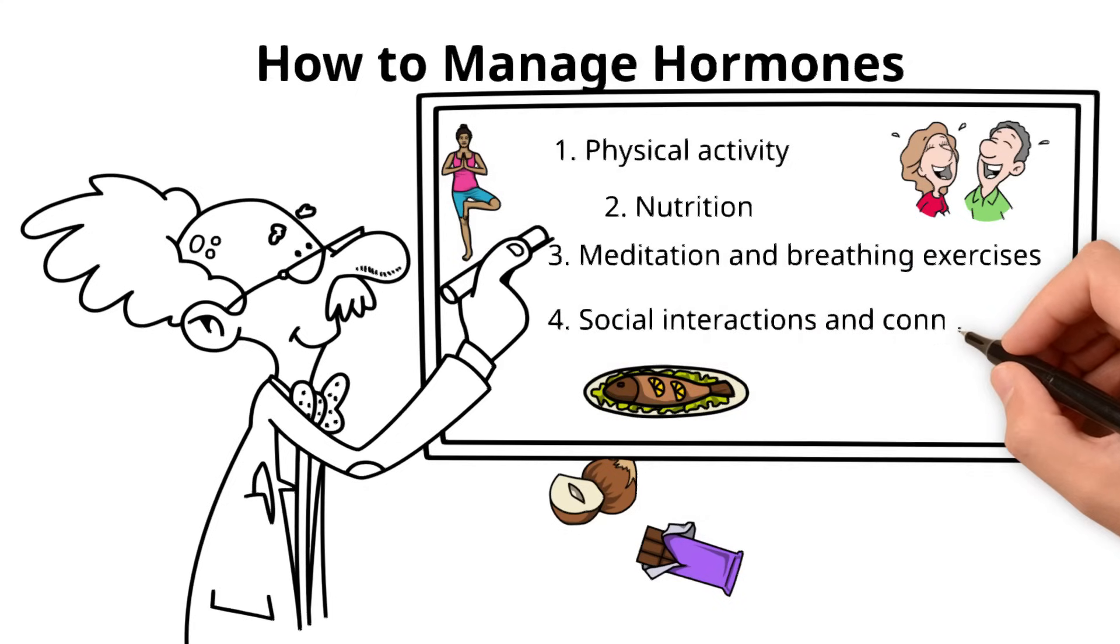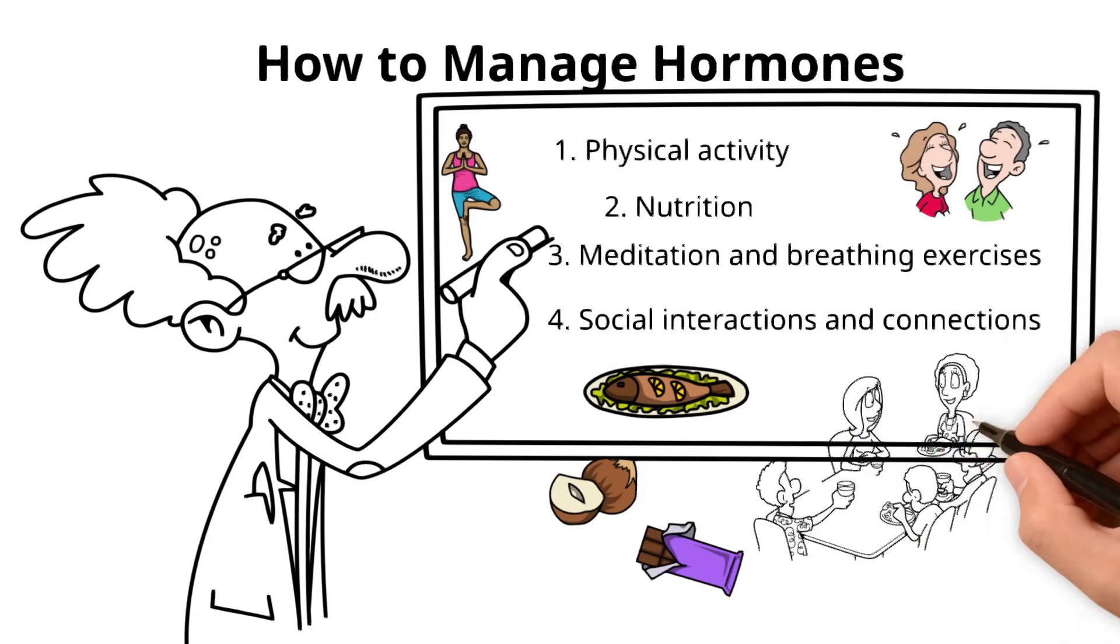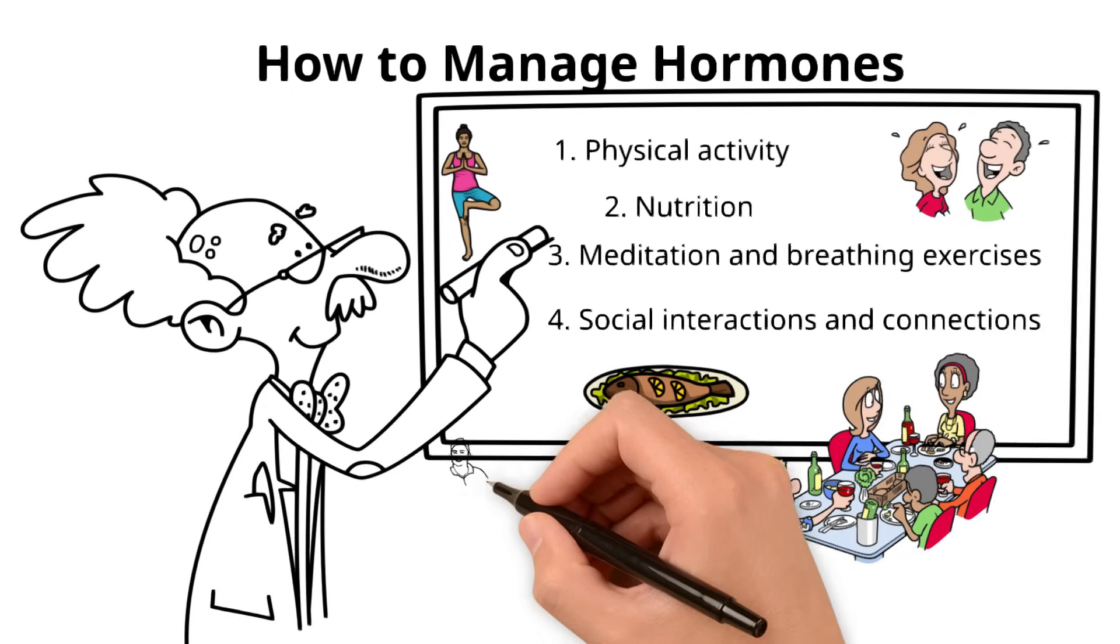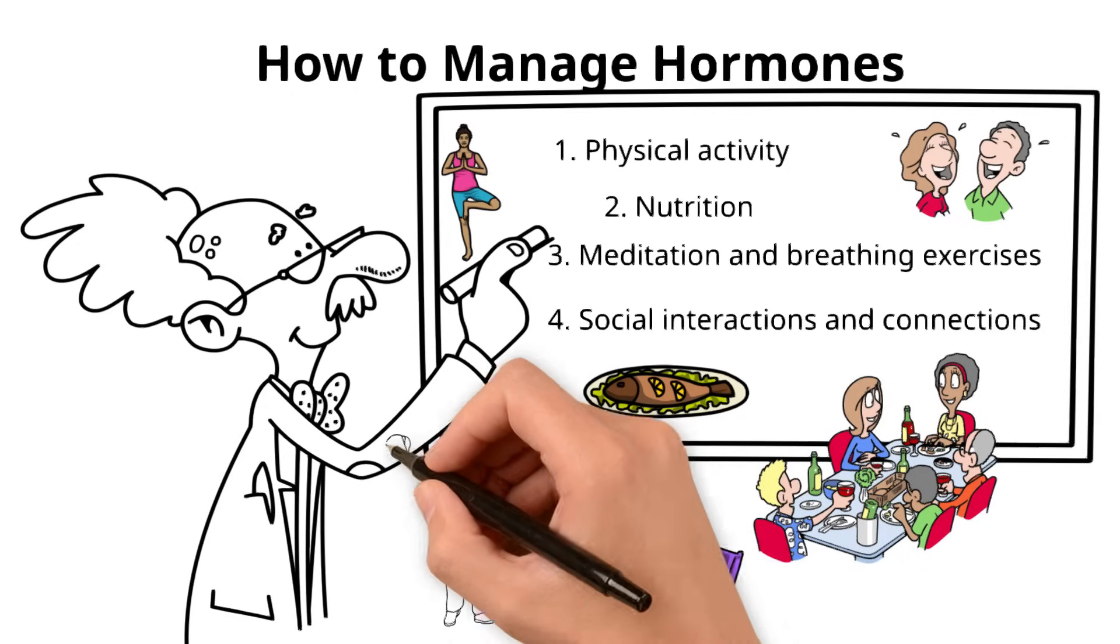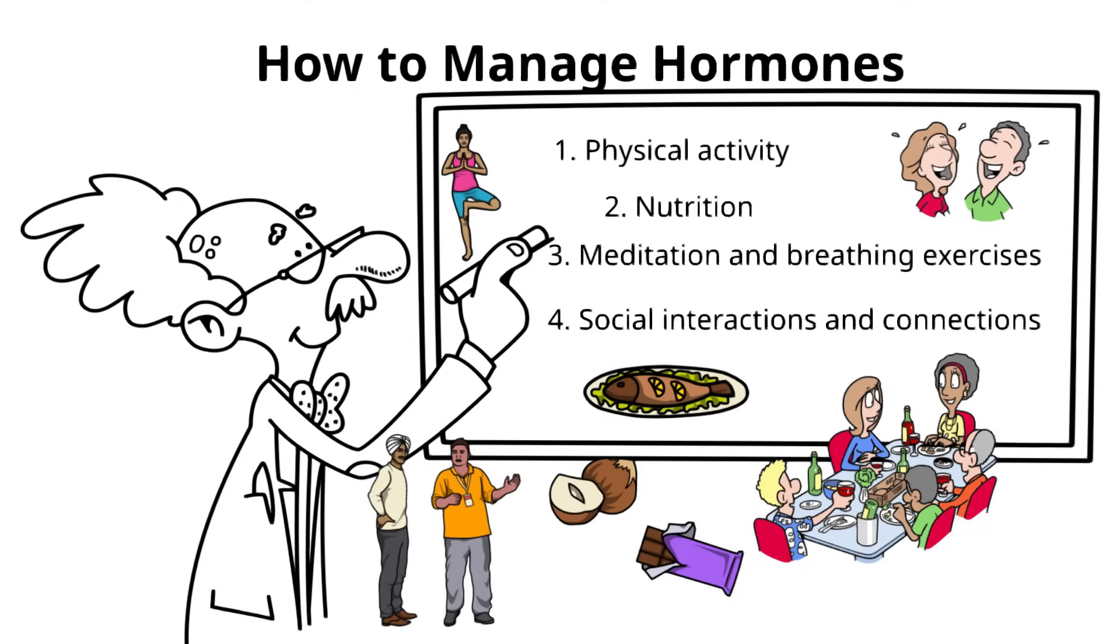4. Social interactions and connections. If you have loved ones, try to find time for meaningful conversations or shared activities to stimulate oxytocin. And if you feel lonely, consider volunteering, joining hobby groups, or even getting a pet. Studies have shown that interacting with animals also boosts oxytocin levels and improves mood.